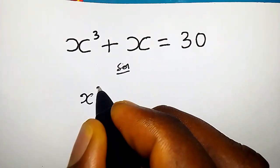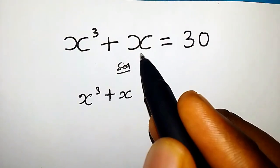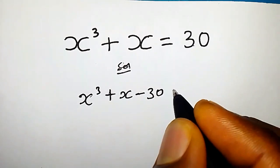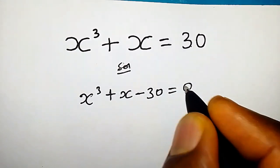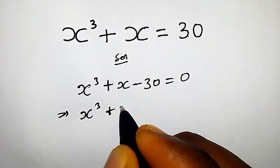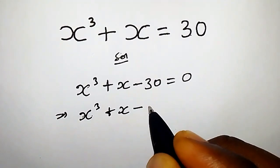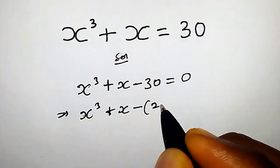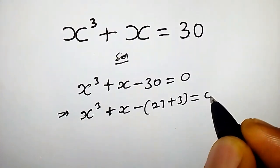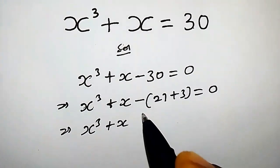We have x to the power of 3 plus x. When 30 comes to the left side it becomes minus 30, which equals 0. So this implies that x to the power of 3 plus x minus 30 is the same thing as writing 27 plus 3, which equals 0. This implies x to the power of 3 plus x.